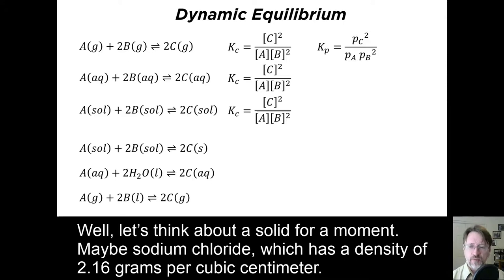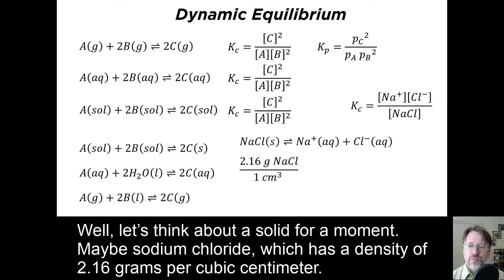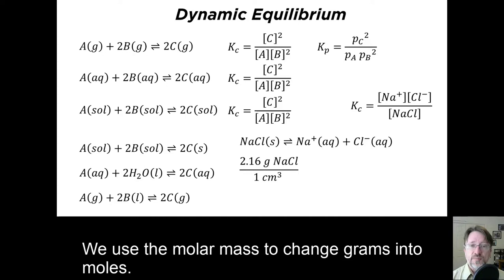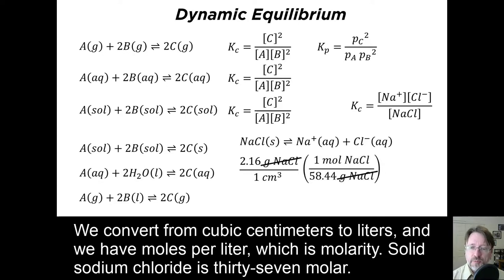Well, let's think about a solid for a moment. Maybe sodium chloride, which has a density of 2.16 grams per cubic centimeter. Let's do some dimensional analysis to see if we can turn this into a concentration for our solid sodium chloride. We use the molar mass to change grams into moles. We convert from cubic centimeters to liters, and we have moles per liter, which is molarity. Solid sodium chloride is 37 molar.